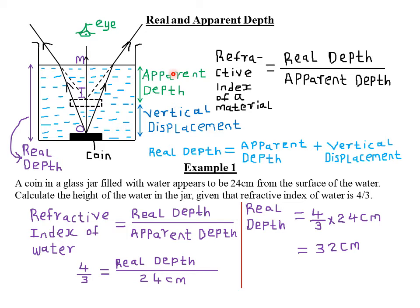We call that the apparent depth. And the actual depth of this particular coin — that is the distance from where our eye is, on the surface of the water, to the true position of the coin — that is what we call the real depth. The real depth is the true depth or the actual depth of that particular coin from the surface of the water or from the point where we are observing normally. The vertical distance from the coin measured from the surface of the water is our real depth.